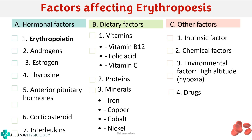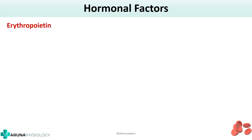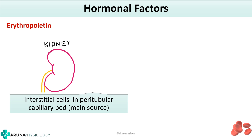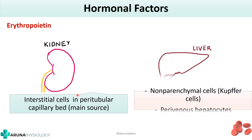First we are going to talk about erythropoietin. Erythropoietin is a hormone which is secreted especially from the kidneys — specifically from the interstitial cells in the peritubular capillary bed. It is very important to know from where in the kidney erythropoietin is produced. Another organ that produces some amount of erythropoietin is the liver, where the non-parenchymal cells, especially the Kupffer cells and perivenous hepatocytes, also produce some erythropoietin. But the major source is the kidney itself.